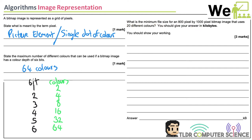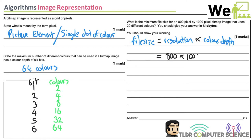To calculate the file size of an image: file size equals number of pixels times color depth in bits. For an 800 by 1000 pixel image, the resolution is 800 times 1000, which is 800,000 pixels.